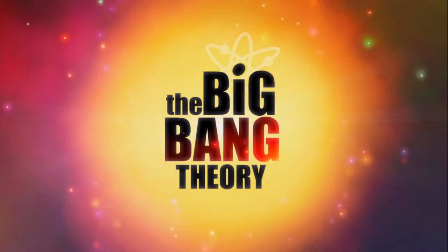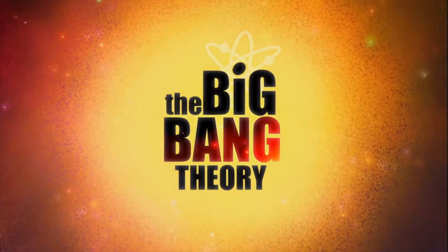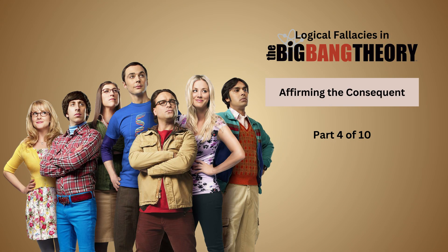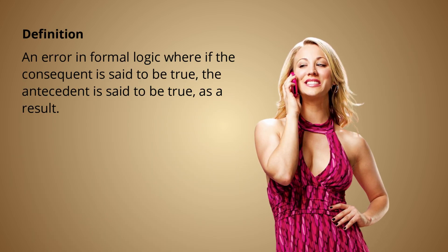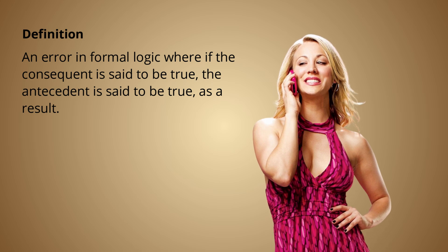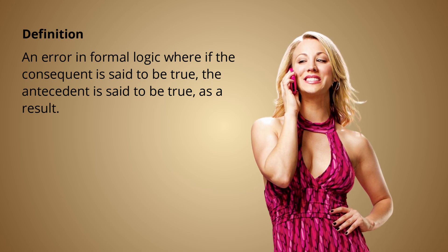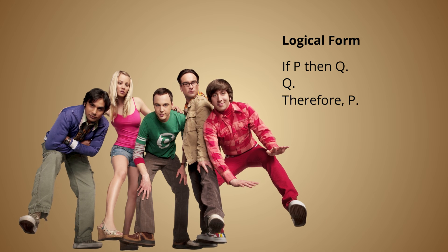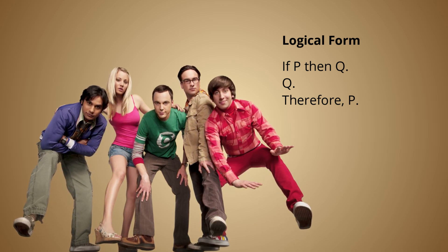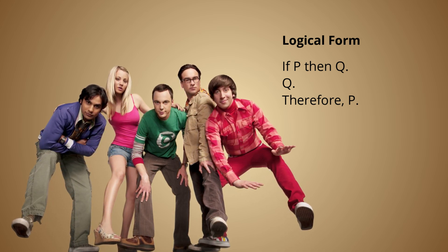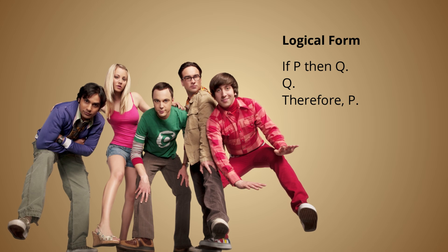Let's explore affirming the consequent in the Big Bang Theory. What does this fallacy entail? Definition: an error in formal logic where if the consequent is said to be true, the antecedent is said to be true as a result. This logical mistake happens when someone concludes a specific cause from an effect that could have multiple causes.